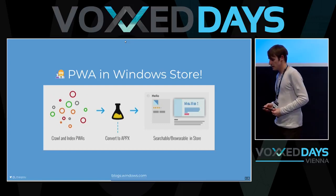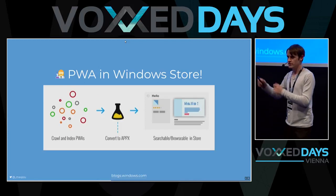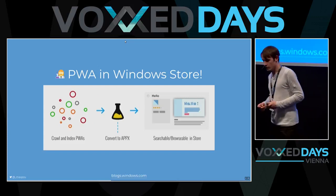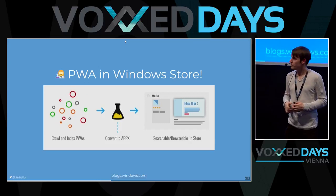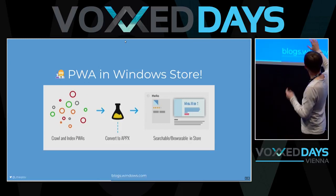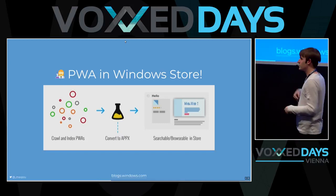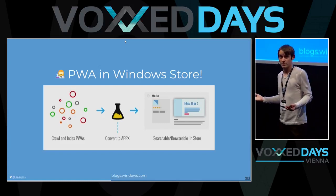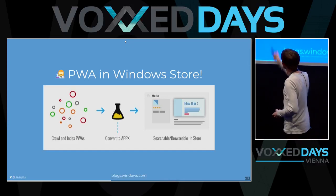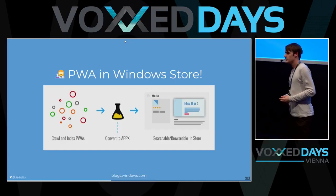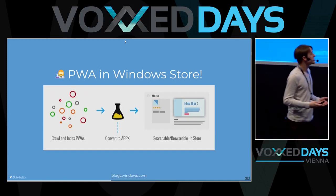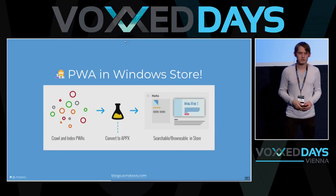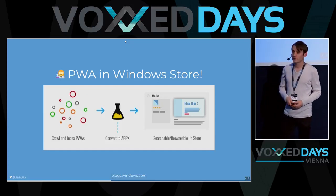Microsoft wants to crawl all Progressive Web Apps from the web, convert them into an appx format, and put them in the Windows Store as real applications. I think it's something really cool, but I put a scientist emoji here — it's still in draft. They said 2018, so maybe around six months from now we'll see some applications in the Microsoft Store, which could be pretty good for reaching new customers.